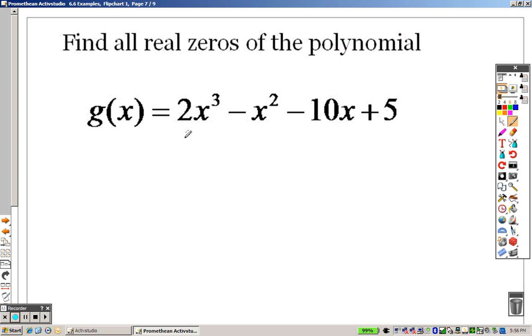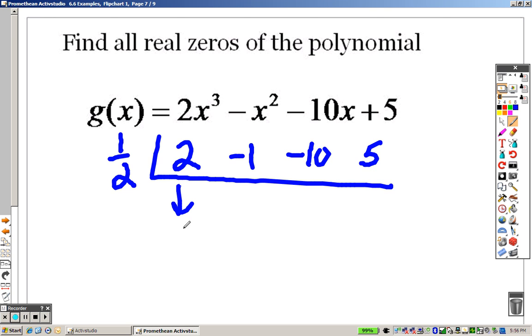So guess what, kids at home? I got to plug in a fraction. I tried the whole numbers, I tried the integers, they don't work. So next up on our list was a half. So I'm going to start with as simple as I can. So let's try a half. Bring down the 2, 2 times a half is 1, I add it to get 0. 0 times a half is 0. I add them to get negative 10. Negative 10 times a half, negative 5, I add it to get 0. Oh yeah, there we go.